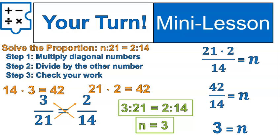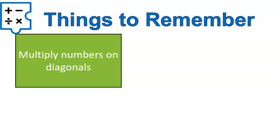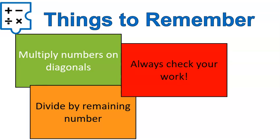That's how we solve proportions. You can be asked two question types with this. One, what is the missing value? That would be 3. And two, what is the proportion? In which case, you'd write out the entire proportion: 3 to 21 equals 2 to 14. Couple things to remember: you multiply the numbers that are diagonal to each other, divide by the remaining number, and always, if you can check your work, go for it. I hope that lesson was helpful for you. Have a wonderful day.